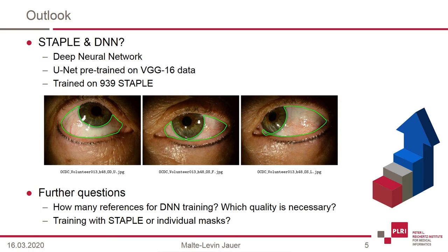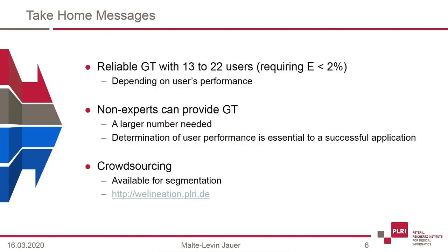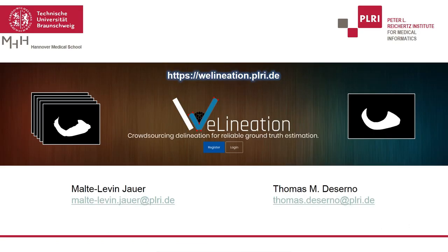The follow-up question for further research is at hand: which trade-off between quality and quantity of crowdsourced segmentations is favorable for the training of deep learning networks? The WeLineation system showed that non-experts can provide ground truth and that determination of user performance is essential to a successful application of crowdsourcing segmentations. We invite you to check it out at relineation.plri.de. Thank you very much.